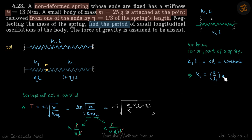K1 will be l upon l1 into k, where l1 is eta l, and k2 will be l upon l2 into k, where l2 is one minus eta into l. So we simplify that and get our answer.